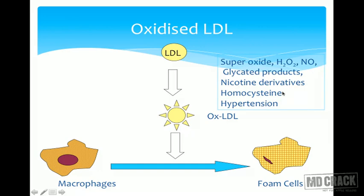Factors that convert LDL into oxidized LDL include superoxide, hydrogen peroxide, nitric oxide, glycated products, nicotine derivatives from smoking, homocysteine, and hypertension. Superoxide and hydrogen peroxide are free radicals, so this is essentially free radical damage to LDL. Glycated products, commonly seen in diabetes mellitus, also lead to oxidation of LDL.